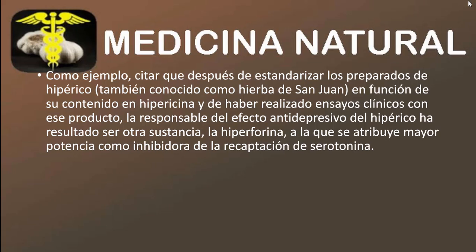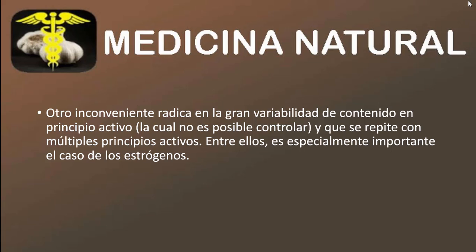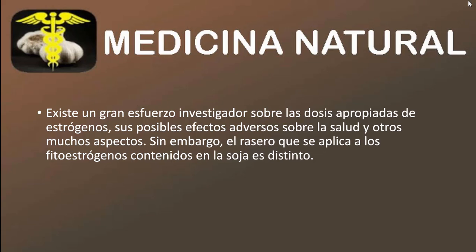Como ejemplo, vamos a citar que después de estandarizar los preparados de hipérico, también conocido como hierba de San Juan, en función de su contenido de hipericina y de haber realizado ensayos clínicos con ese producto, la responsable del efecto antidepresivo del hipérico ha resultado ser otra sustancia: la hiperforina, a la que se atribuye mayor potencia como inhibidora de la recaptación de serotonina. Otro inconveniente radica en la gran variabilidad de contenido en principios activos, especialmente importante en el caso de los estrógenos. Existe un gran esfuerzo en investigación sobre las dosis apropiadas de estrógenos, sus posibles efectos adversos sobre la salud y otros muchos aspectos.